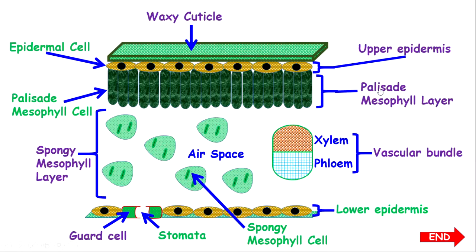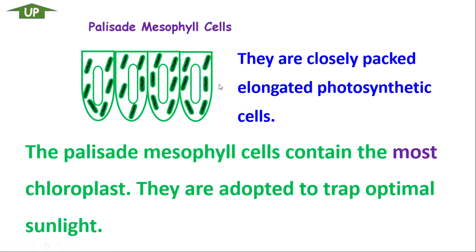Now let's look at the palisade mesophyll layer, which is made up of palisade mesophyll cells. These cells are closely packed and elongated, and they are also photosynthetic. Very important to note: the palisade mesophyll cells contain the most chloroplasts and are adapted to trap optimal sunlight. Since they contain the most chloroplasts and absorb the most sunlight, you can conclude that the palisade mesophyll cells are where most photosynthesis takes place. Because they are elongated and closely packed, sunlight will be difficult to pass through — hence they absorb most of the sunlight inside the leaf.